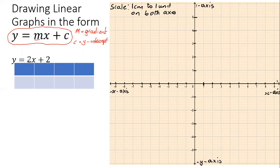Here we are asked to draw the graph y = 2x + 2. As you can see, m in this case would be equal to two, which is the coefficient of the x term, so the gradient is two. And the y-intercept c is also two.